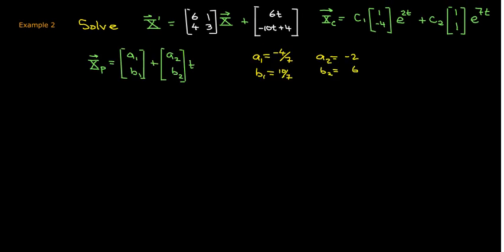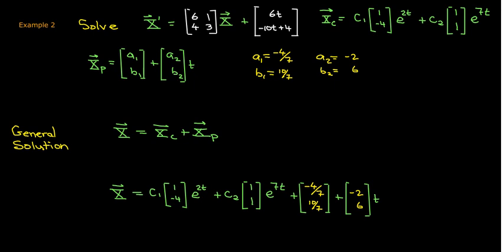So now if I put that together, that would tell me what my particular solution is. I have all of the missing variables. And so I'll put that together with the complementary solution to get a general solution. So again, the a1 and the b1 have been replaced by the negative 4 7ths and 10 7ths. The a2 and the b2 have been replaced by negative 2 and 6.